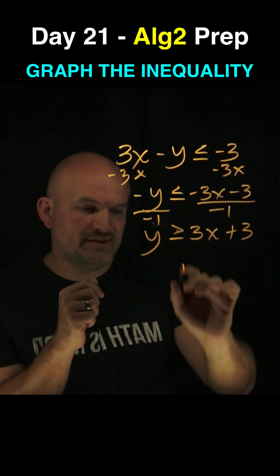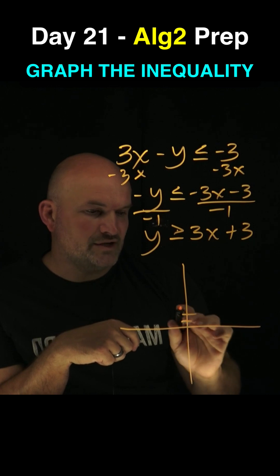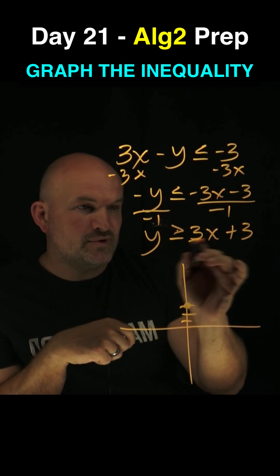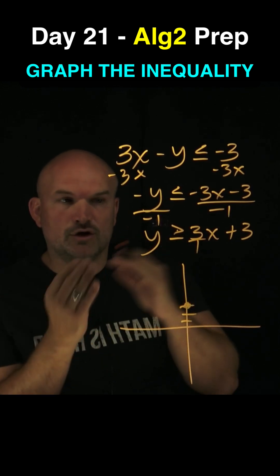Now, to go ahead and graph this, we want to think about it just like we did with a linear equation. 3 represents our y-intercept, so I'm going to put a nice little dot here. And then 3, or we can read it as 3 over 1, represents the slope, the change in the y over the change in the x.